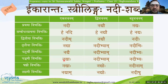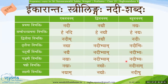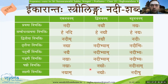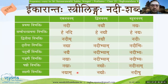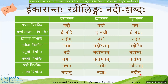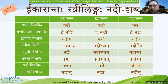It is a Sanyukta Akshara — Dakara and Yakara combination. Nadyaha, nadibhyam, nadibhyaha. Nadyaha, nadyoh, nadinam. Nadyam, nadyoh, nadishu. Nadyam, nadyoh, nadishu. Uttamam, dhanyavadaha. Please keep practicing.